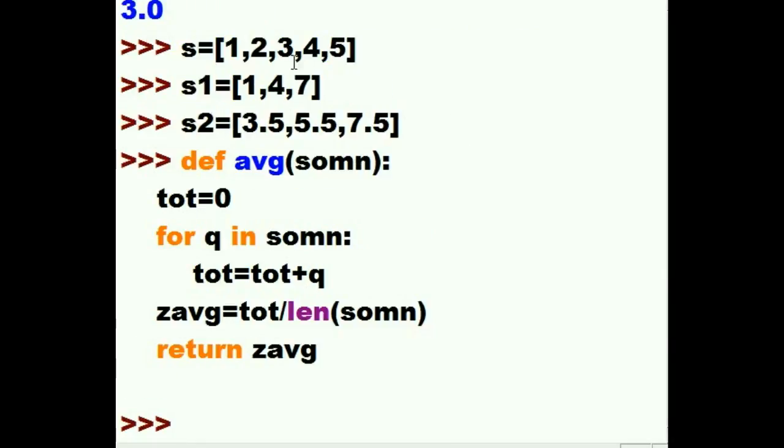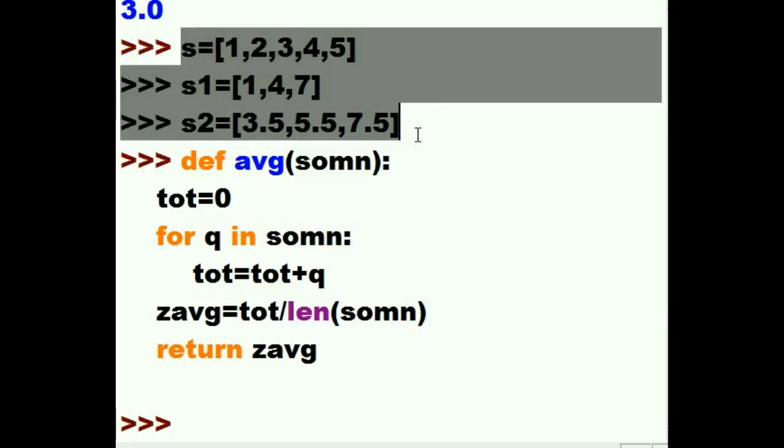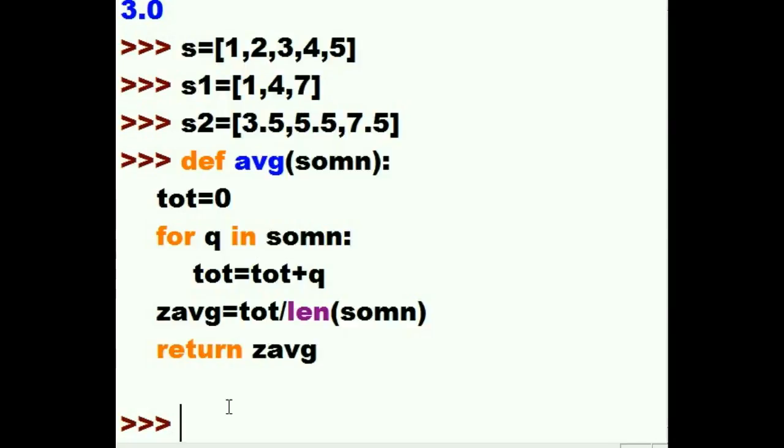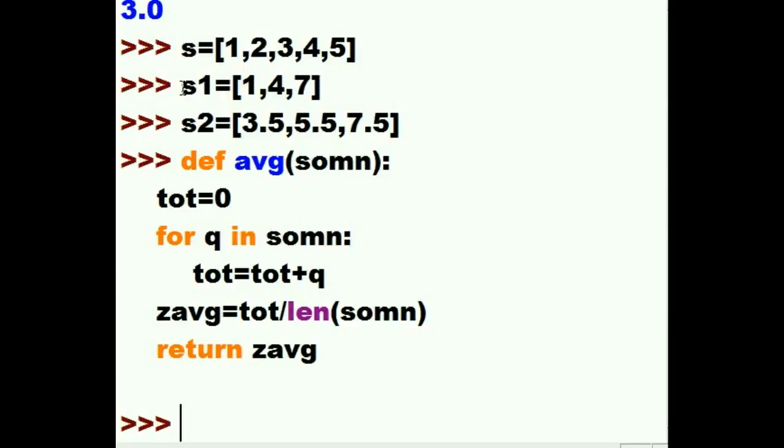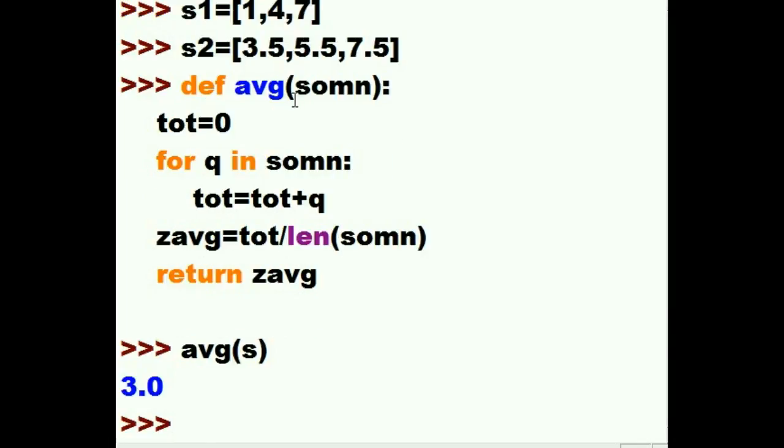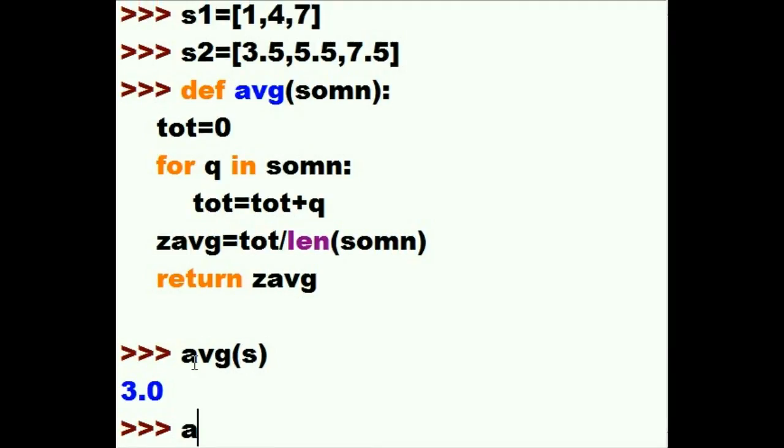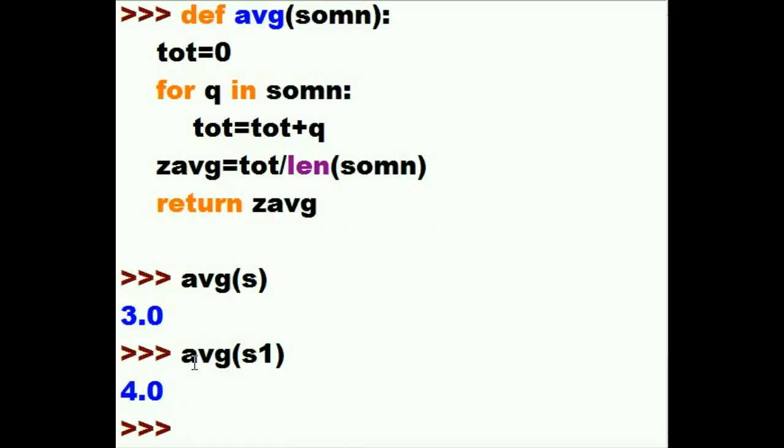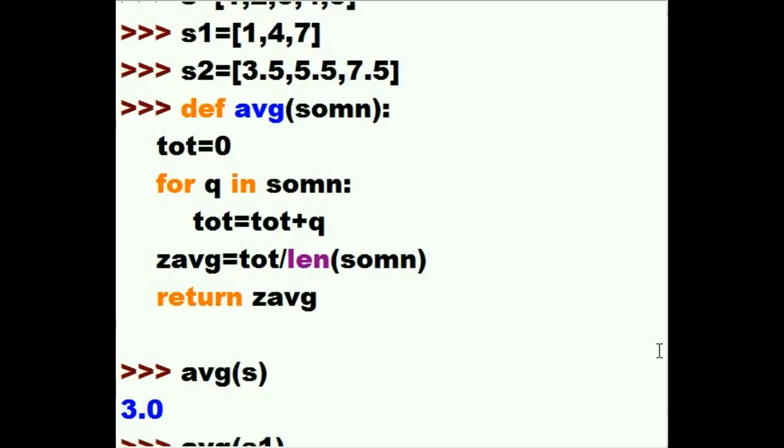And I moved everything down a little bit so you can see all of the lists and the function. Now, let's do the next one, which is s1. I'm going to call average and I'm going to pass it s1. Here we go. And I'm going to pass it s1. And I get back 4, which makes a lot of sense because 1 of 4 is 5 and 7 is 12. 12 divided by 3, 3 items here. That gives you 4.